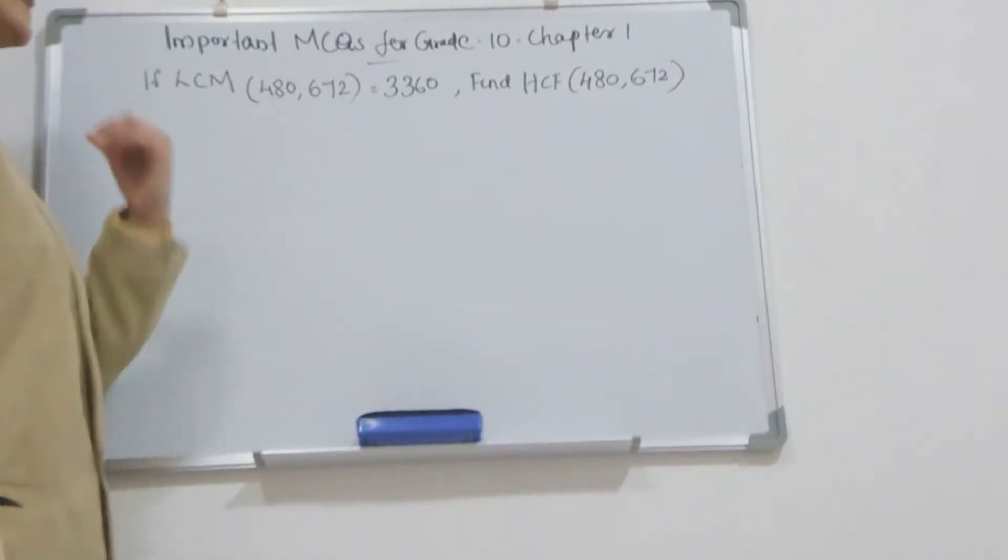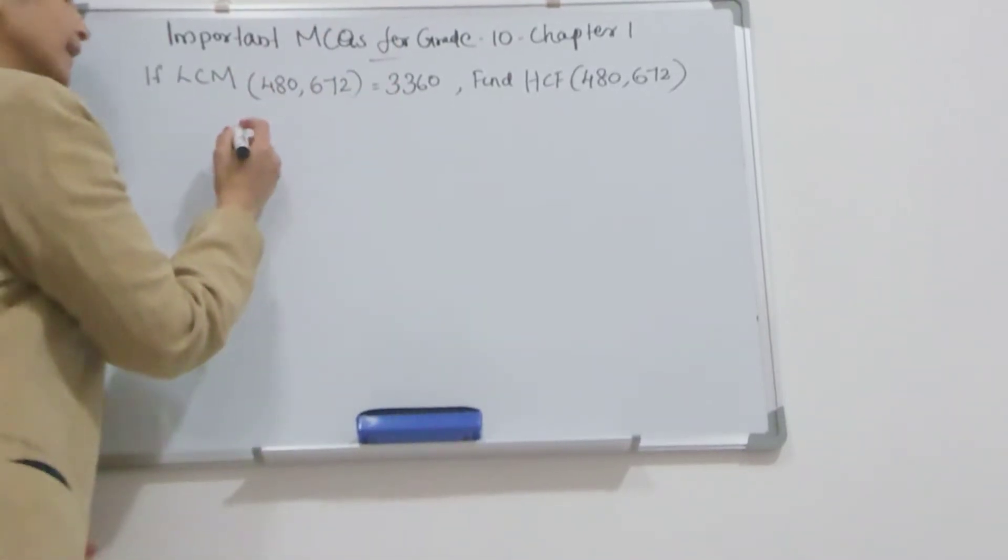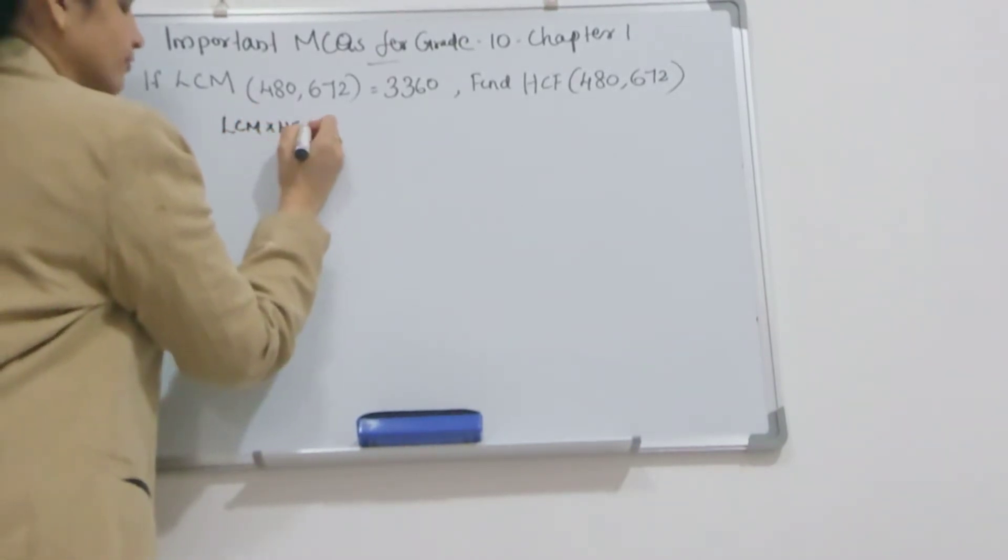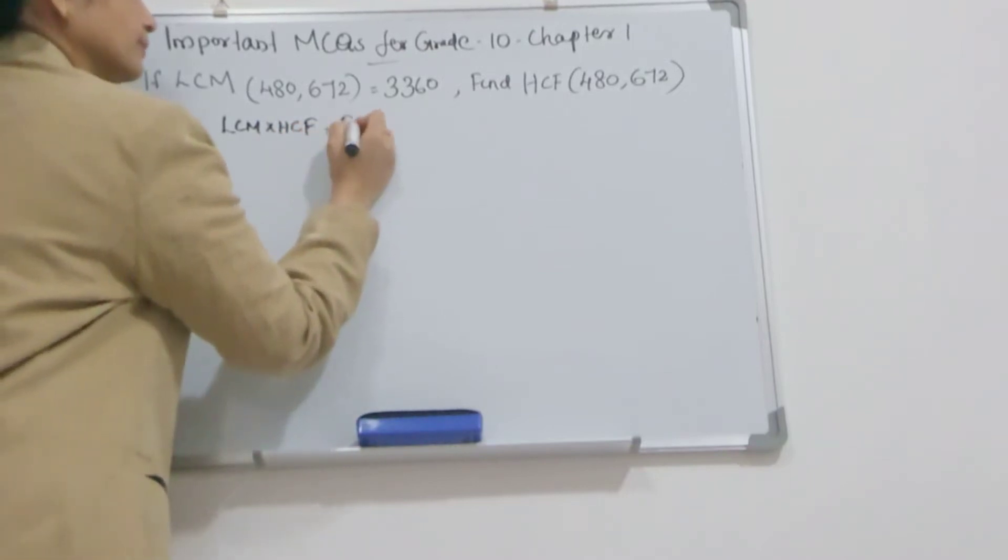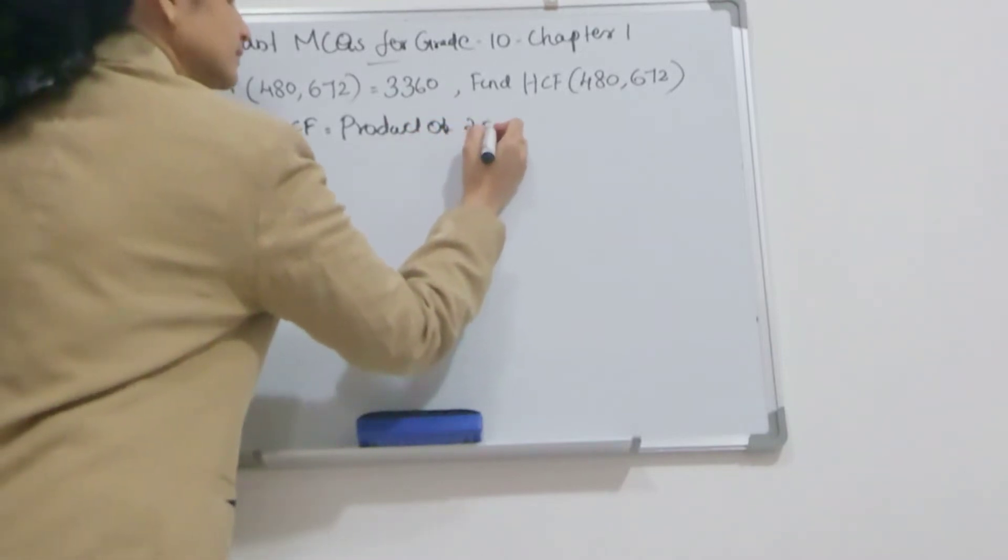Here, LCM is given, you have to find HCF. You learned the formula: LCM × HCF equals the product of 2 numbers.